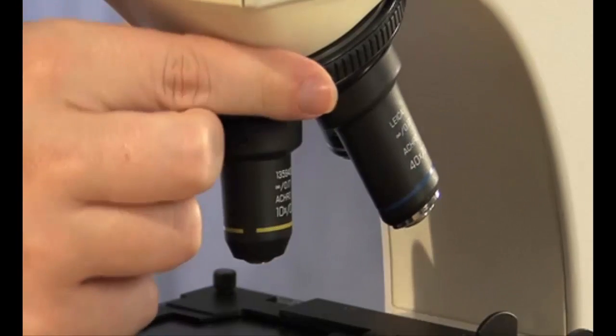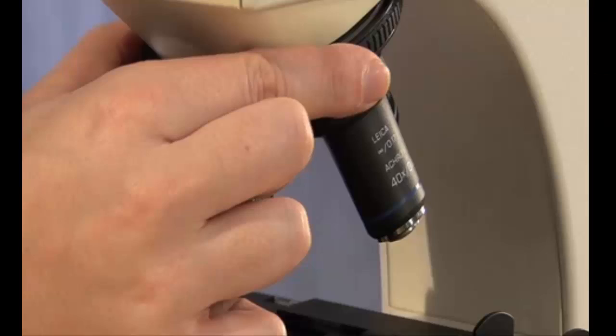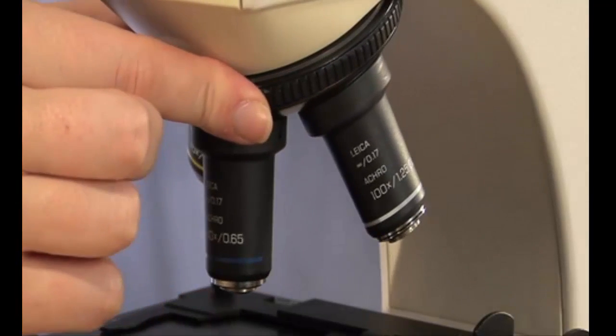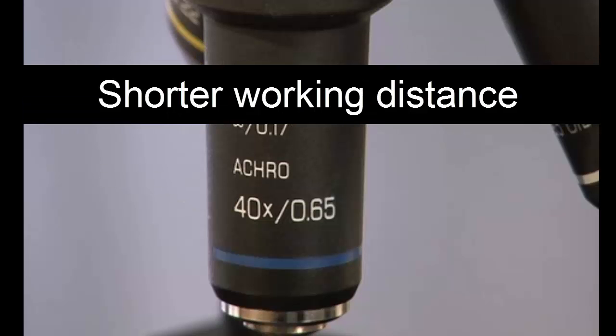Next is the low power objective, which has a magnification of 10x. Next is the high power objective lens, which has a magnification of 40x and a much shorter working distance.